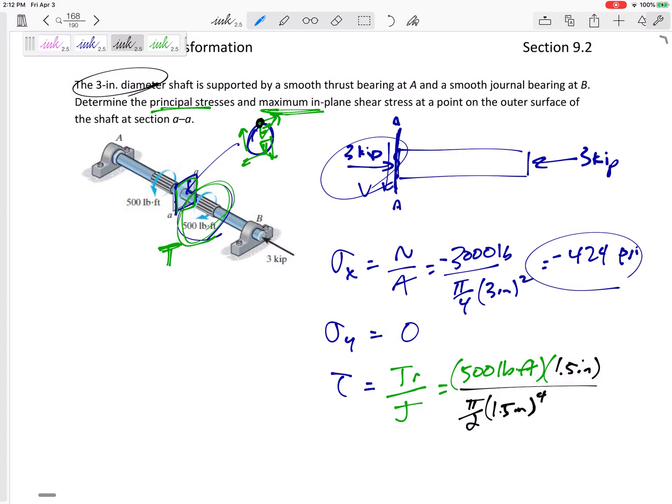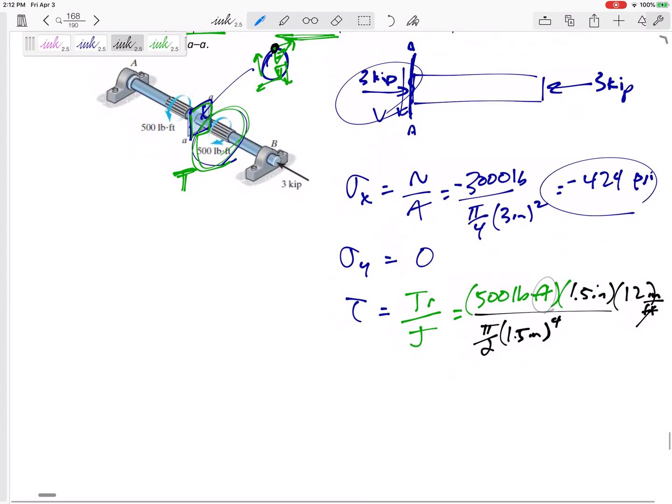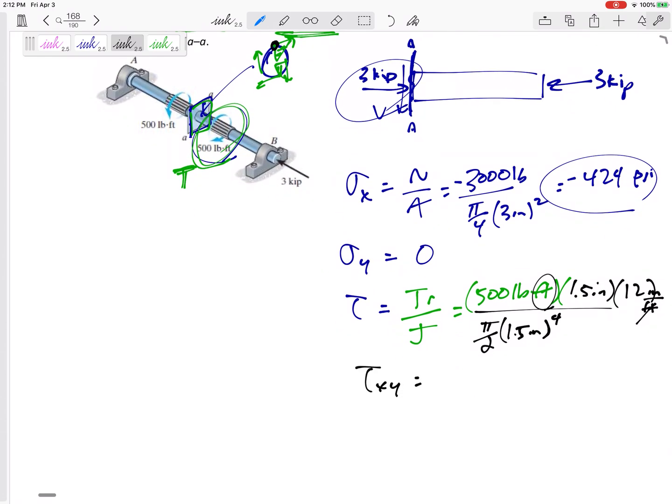Over the J, J is pi by 2 R to the fourth. And don't get it confused with the area. Times 12 inch per foot, that's a unit conversion right there, feet right there. So my tau XY is going to be 1131.8 psi.